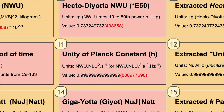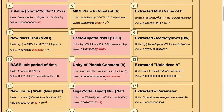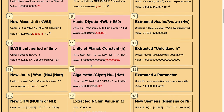Counting the decimal places, the uncertainty decimal places start to jiggle at the 10 to the power of minus 16th level.